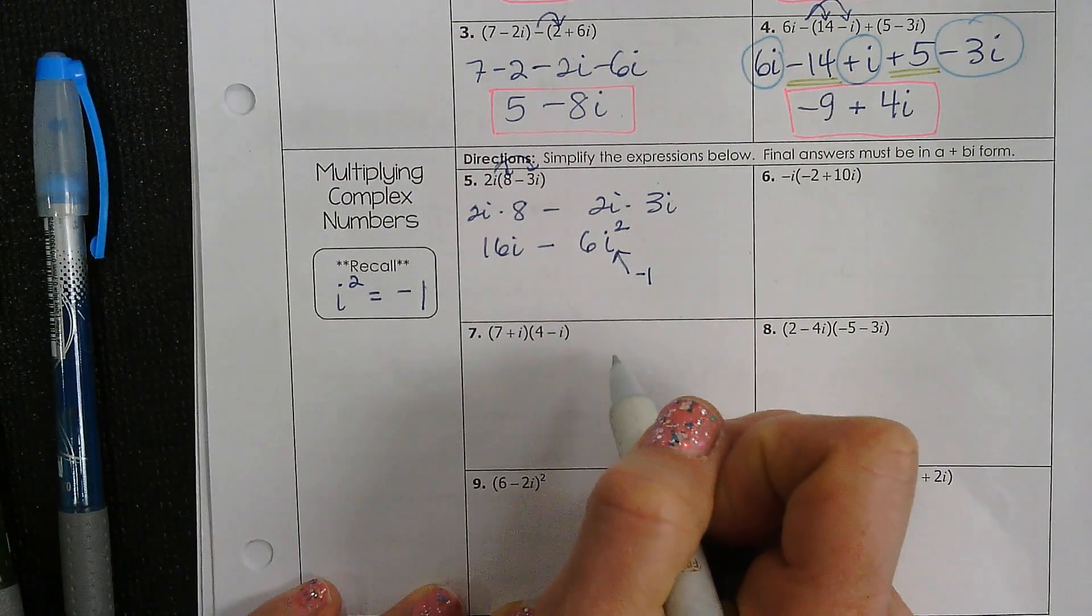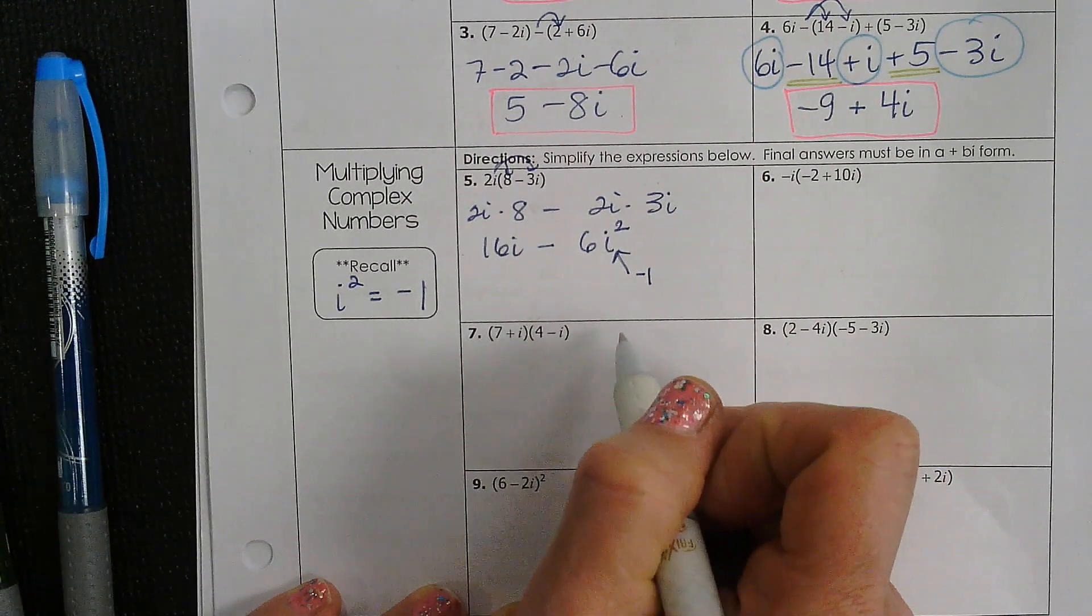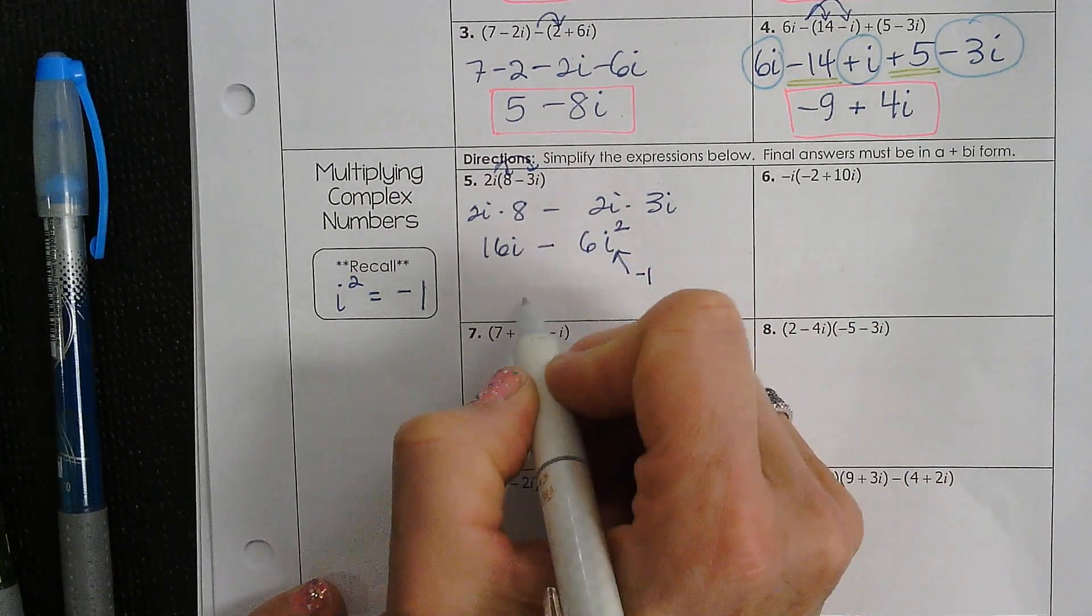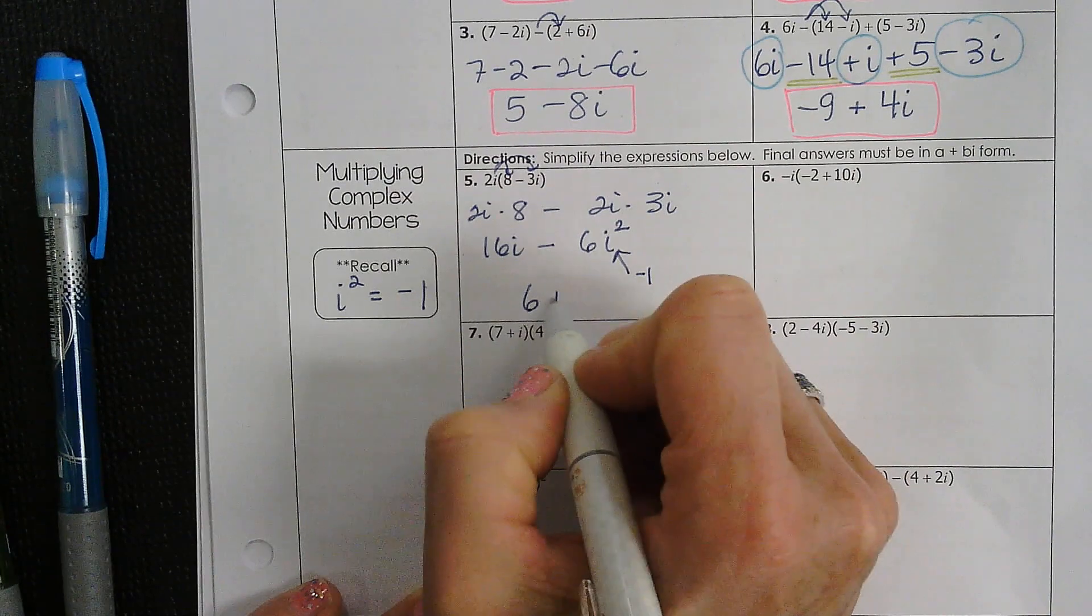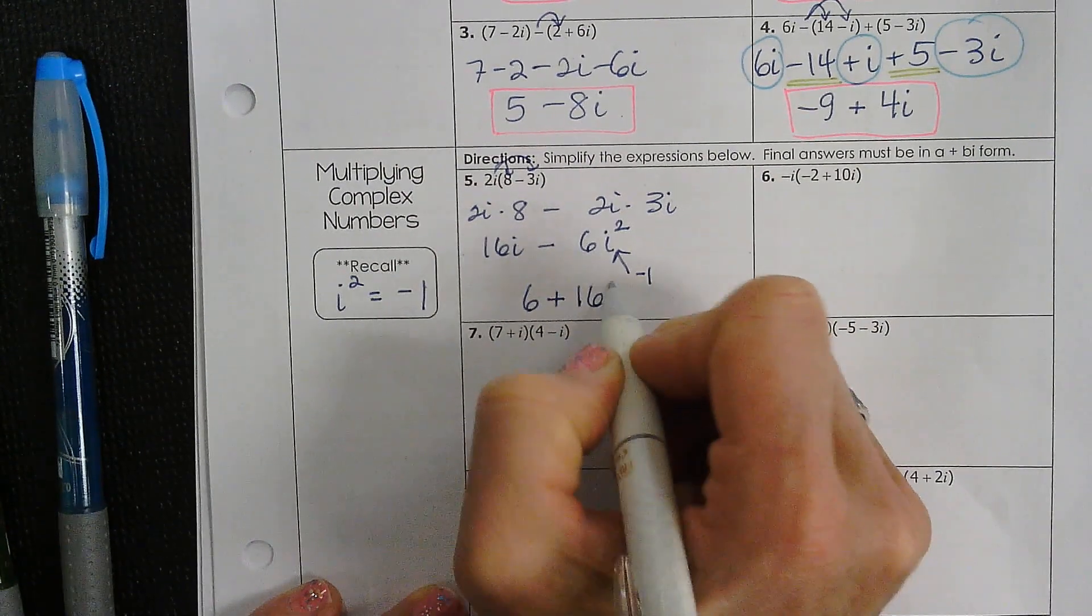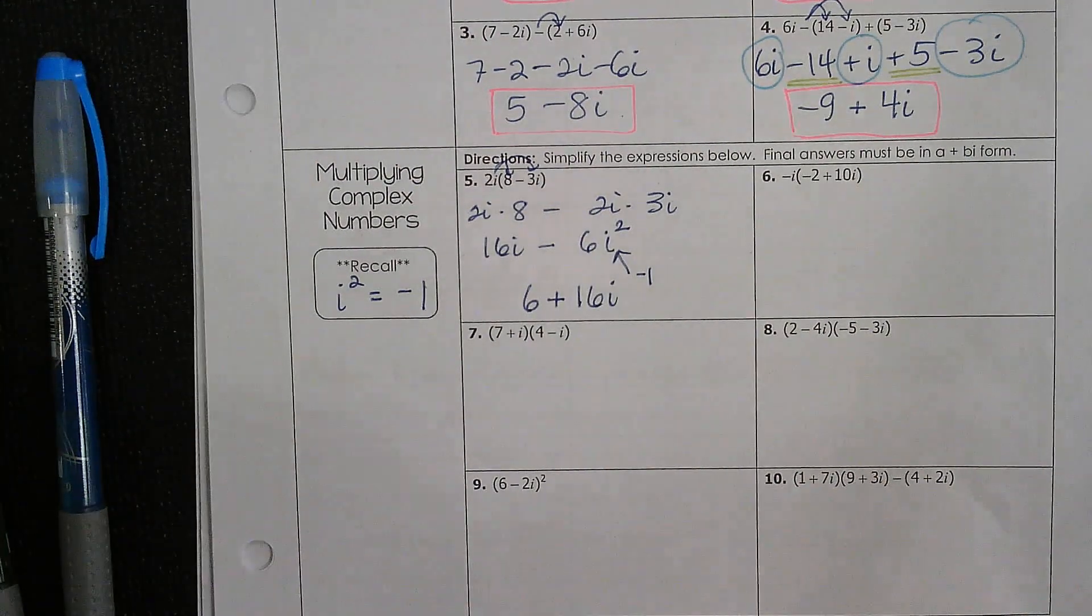It's going to turn into a 6, right? A regular positive 6. So your final answer will be 6 plus 16i, because you have to put the real part first.